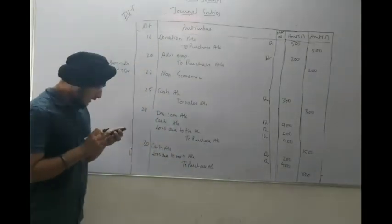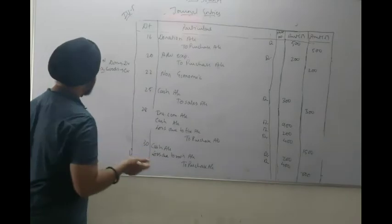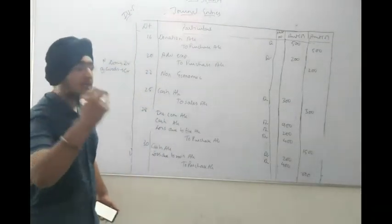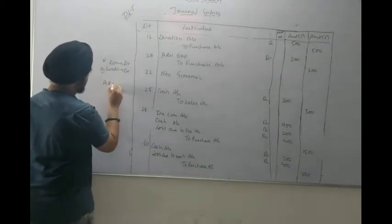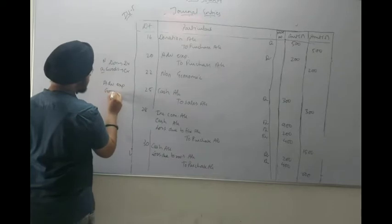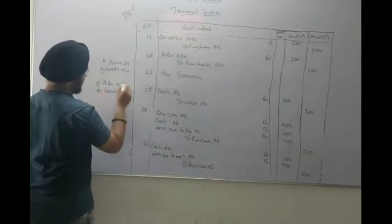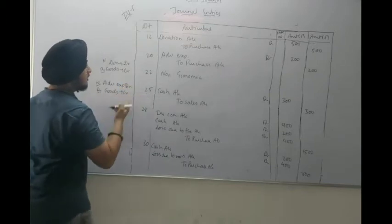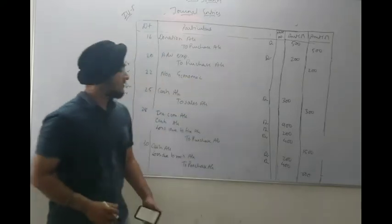Next transaction: Goods of Rs.200 distributed as free samples for advertisement purpose. This is an advertisement expense (nominal account, debit), and goods go out (real account, credit). Journal entry: Advertisement expense account debit to Purchase account.